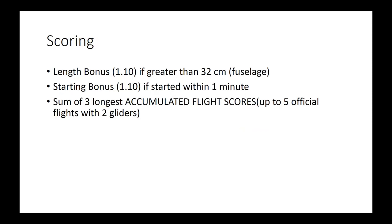For scoring, there are two bonuses that multiply your score by 1.1. One is a length bonus if your fuselage is longer than 32 centimeters, and the other is a starting bonus if you start within one minute of your five-minute test period. Your score is the sum of the three longest accumulated flight times, and you can have up to five official flights with two gliders, or you can just use one.